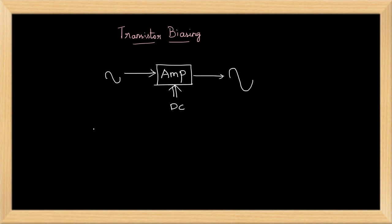So the process of setting DC supply to the transistor such that the input signal is amplified by it at correct level is called transistor biasing, that is establishing operating point. Establishing operating point on the characteristics is called DC biasing.